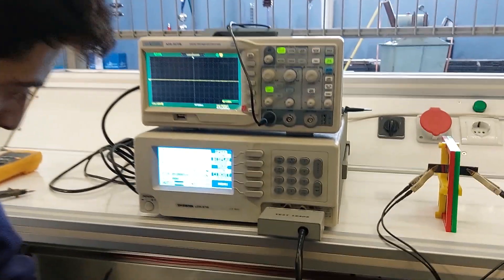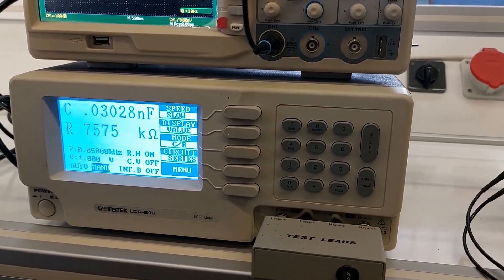With the RLC meter, it can be seen that the capacitor has 30 picofarads of capacitance with air between the plates.